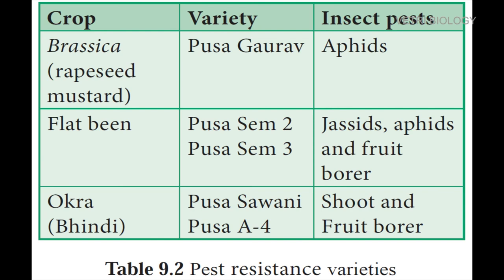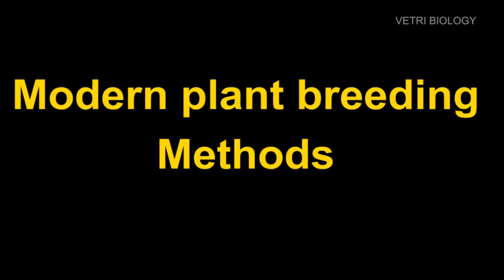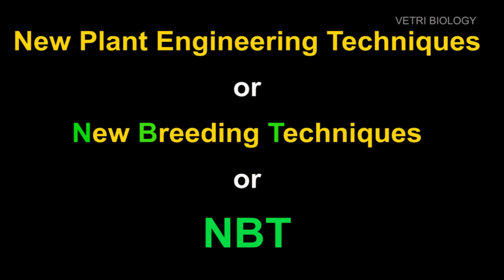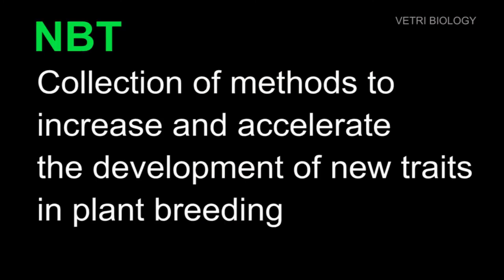So far we have learnt conventional methods of plant breeding. Now let us know about modern breeding. The following are some modern plant breeding tools to improve crop varieties: genetic engineering, plant tissue culture, protoplasmic fusion or somatic hybridization, molecular marking, and DNA fingerprinting. These are also called New Breeding Techniques, or NBT in short. NBT are a collection of methods that could increase and accelerate the development of new traits in plant breeding.